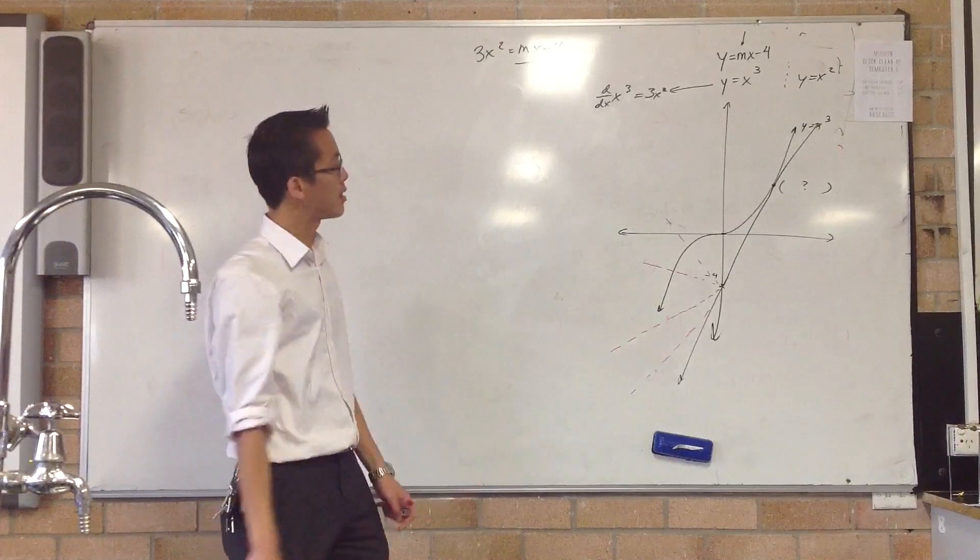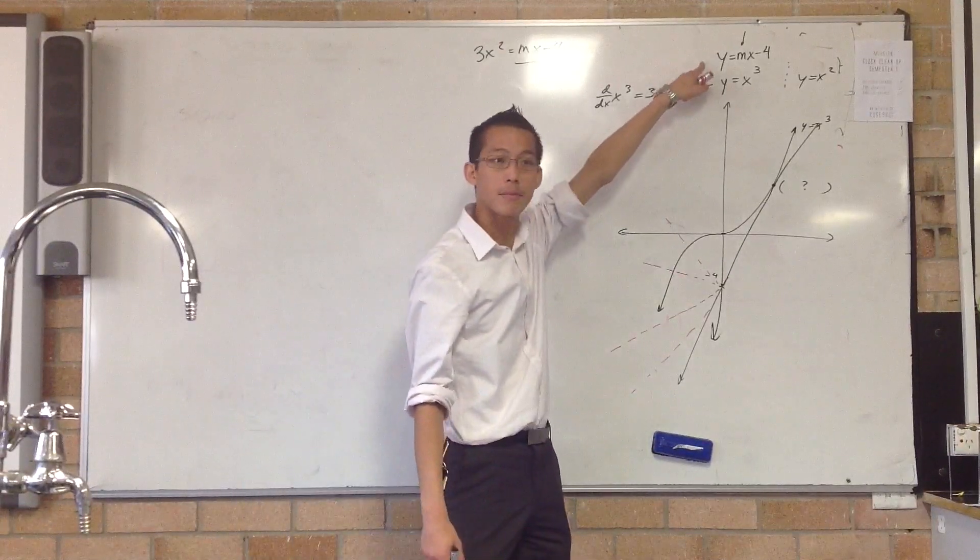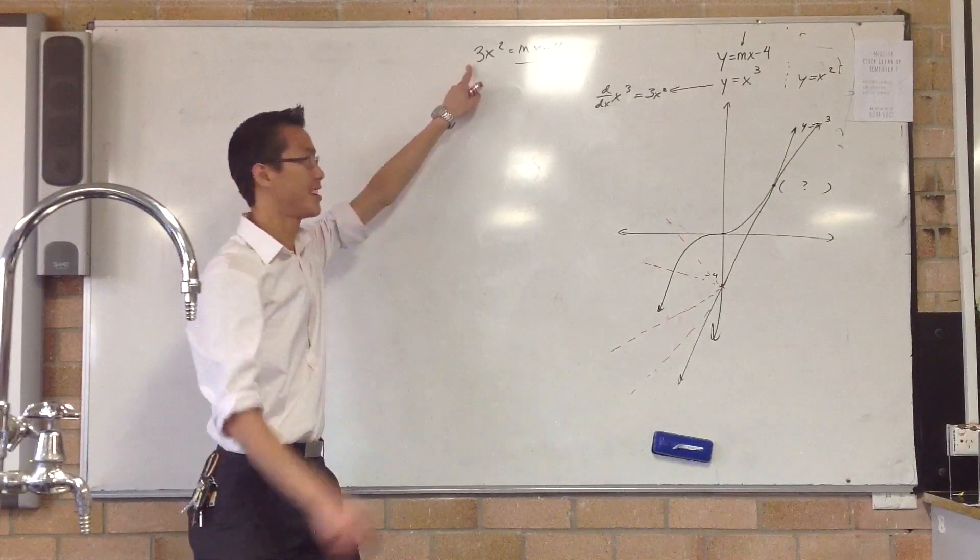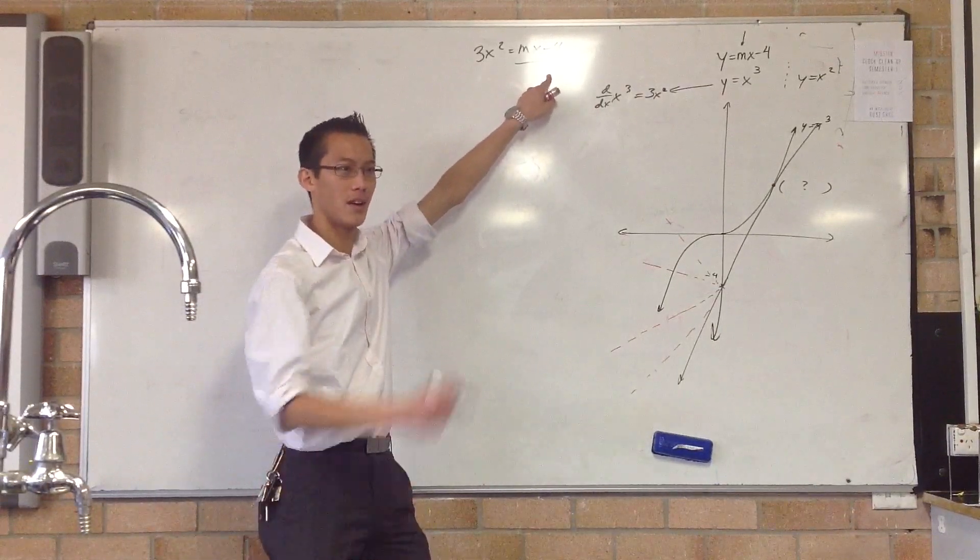Now what does this mean? Well, mx-4 is the y-coordinate of this line. So it'll tell me when the gradient of the curve is the same as the y-coordinate of the straight line.